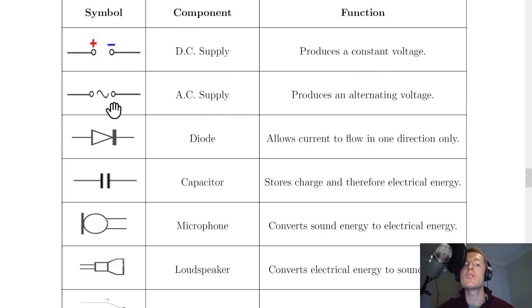Next, we have an AC supply. So notice how this has two little circles, but we've got this little wave pattern in the middle. Now you might also see the AC supply with a big circle with the little wave pattern inside that circle, but it just means the same thing. Now an AC supply produces an alternating voltage. So alternating means changing. And that's because we've got an alternating current. So an alternating current gives rise to an alternating voltage.